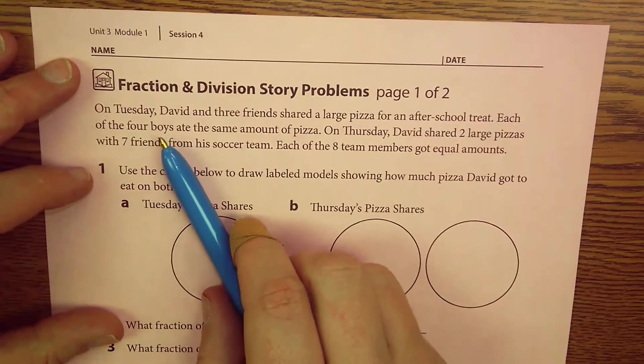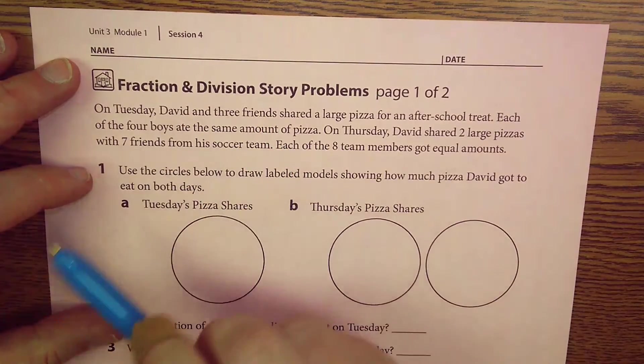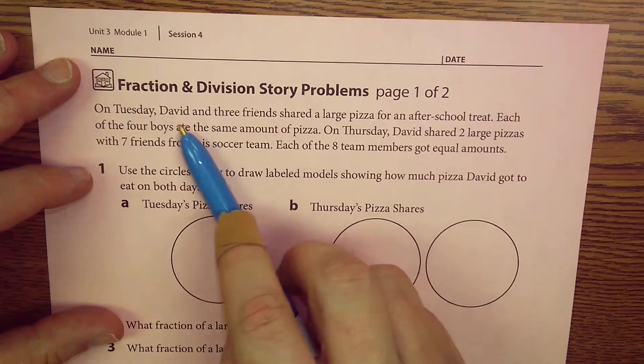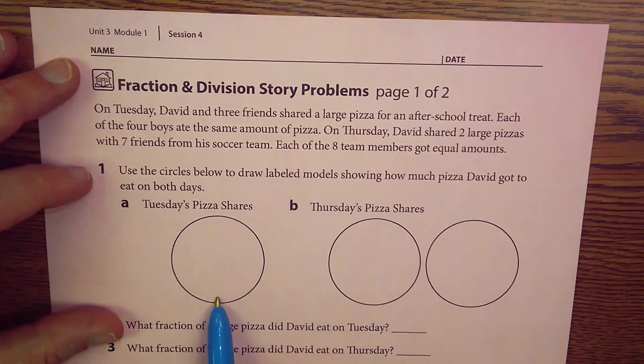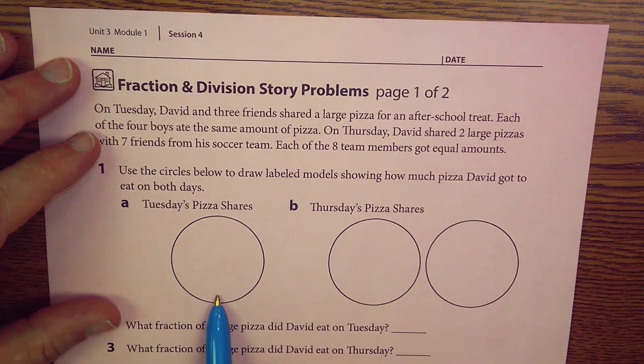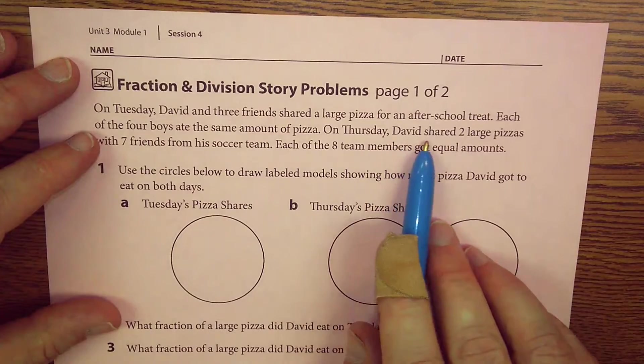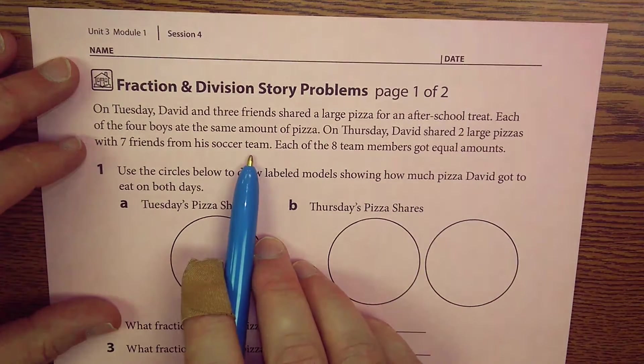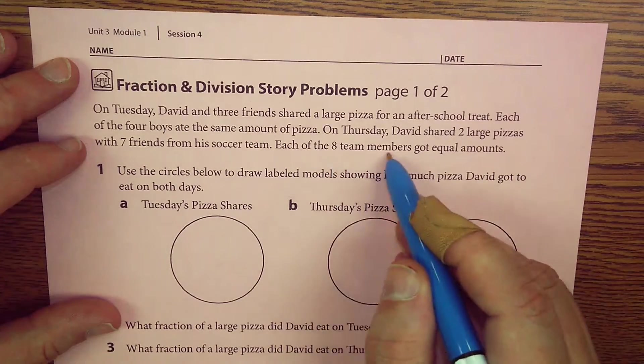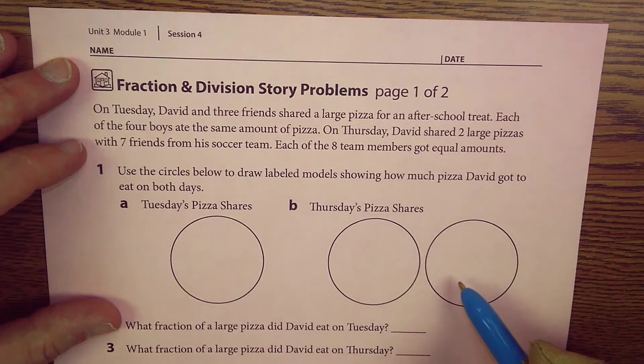On Tuesday, David and three friends, so three friends plus David sounds like four, right? David and his three friends shared a large pizza. That's this pizza right here. For an after-school treat, each of the four boys ate the same amount of pizza. On Thursday, David shared two large pizzas with seven friends from his soccer team. Each of the eight team members got equal amounts.